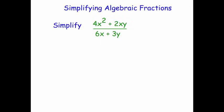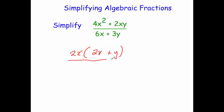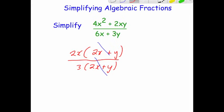Let's look at another example. This time we've got 4x squared plus 2xy over 6x plus 3y. We're going to factorise the numerator and denominator. On the top line, we can take out 2x — so 4x squared divided by 2x is 2x, and 2xy divided by 2x leaves y, giving 2x bracket 2x plus y. On the denominator, 6x plus 3y is divisible by 3, so we take 3 out to get 3 bracket 2x plus y. The expression 2x plus y appears on both numerator and denominator, so they cancel, leaving 2x over 3.